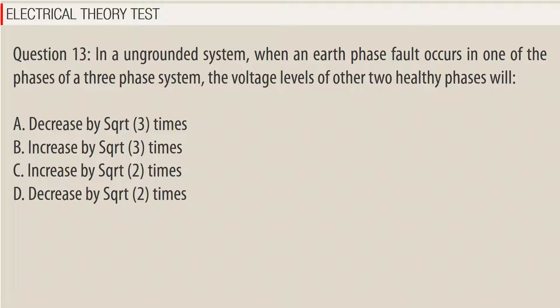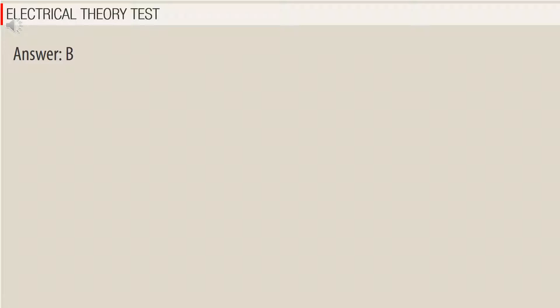Question 13: In an ungrounded system, when an earth-phase fault occurs in one of the phases of a three-phase system, the voltage levels of the other two healthy phases will — A. Decrease by √3 times, B. Increase by √3 times, C. Increase by √2 times, D. Decrease by √2 times. Answer: B.